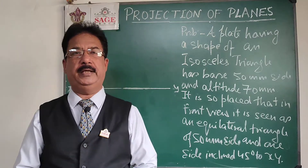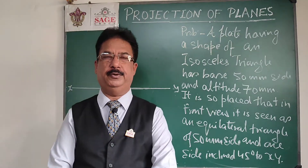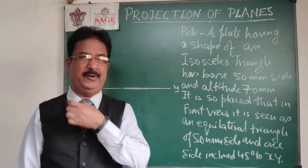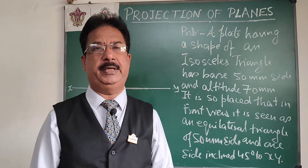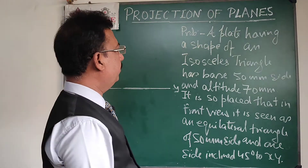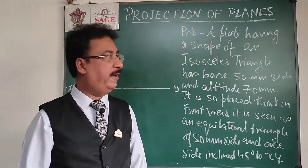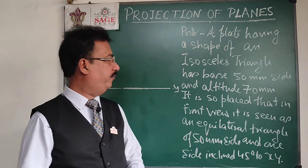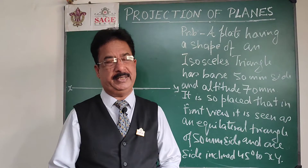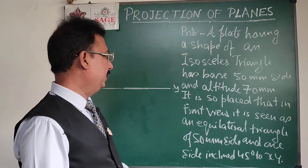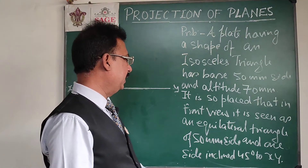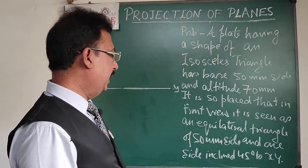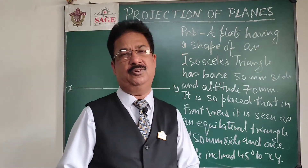Hello students, today I have another very good problem on projection of planes. This will be a special type of problem in which the shape of the second view will be given to us. The problem is: a plate having the shape of an isosceles triangle has base 50 mm and altitude 70 mm. It is so placed that in the front view it is seen as an equilateral triangle of 50 mm side, with one side inclined at 45 degrees to the XY line.